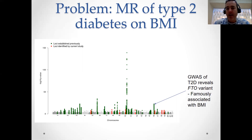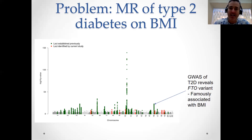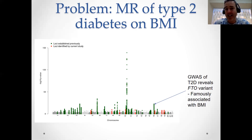In other words, if BMI is causal for type 2 diabetes, and if you have a large enough GWAS of type 2 diabetes, you're going to start finding variants at genome-wide levels of significance whose primary association is with BMI and not type 2 diabetes. And that's problematic if you include those variants in an MR analysis thinking their primary association is with type 2 diabetes, when in actuality it's with BMI.